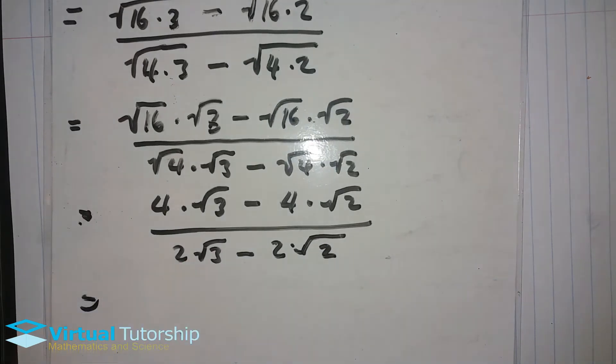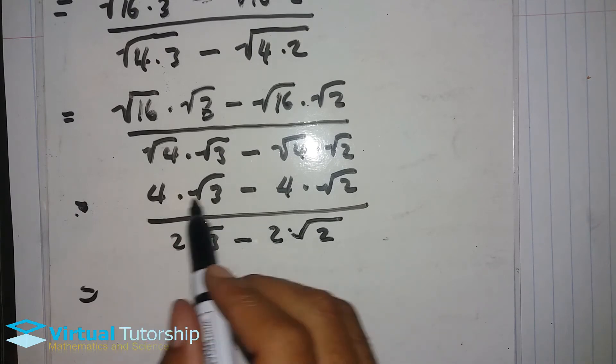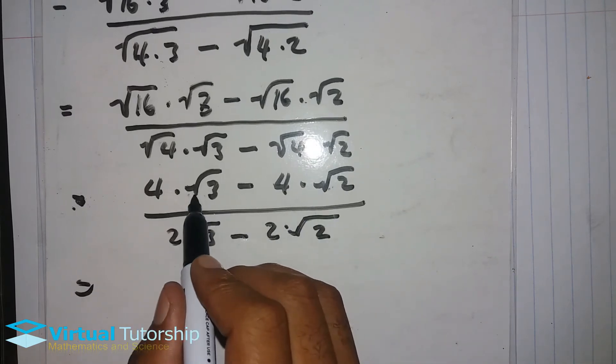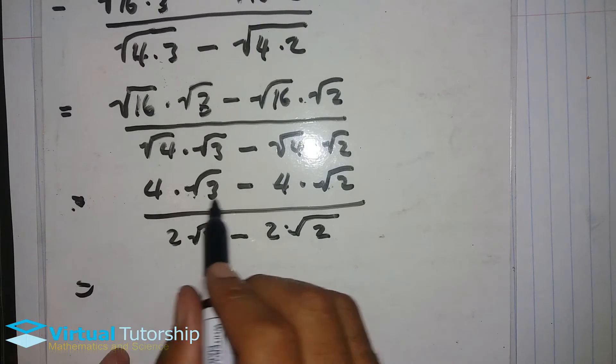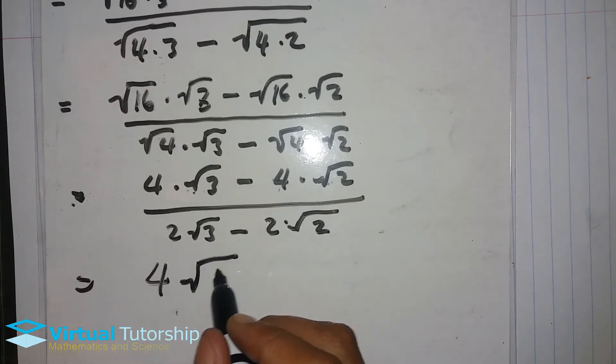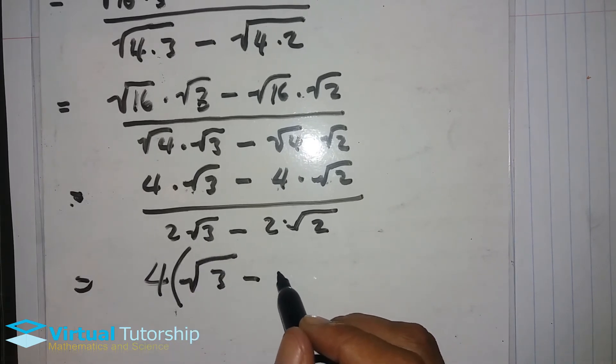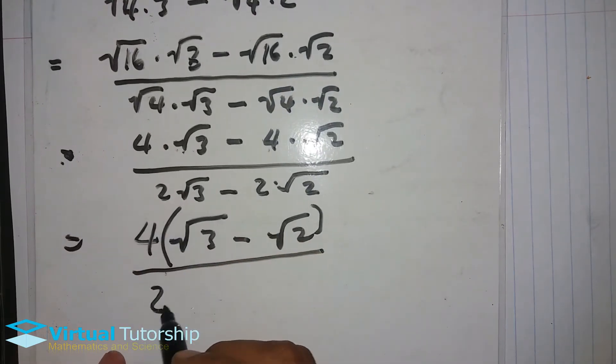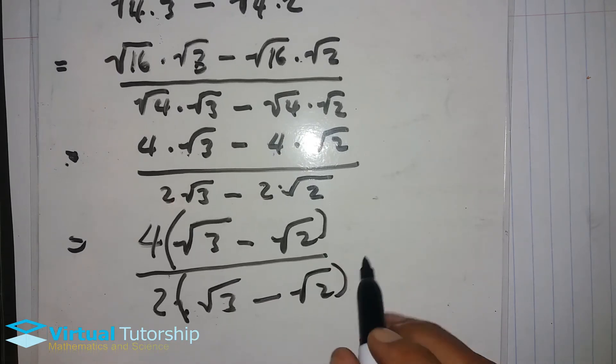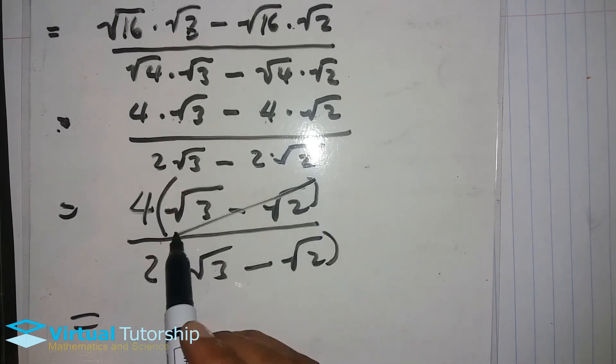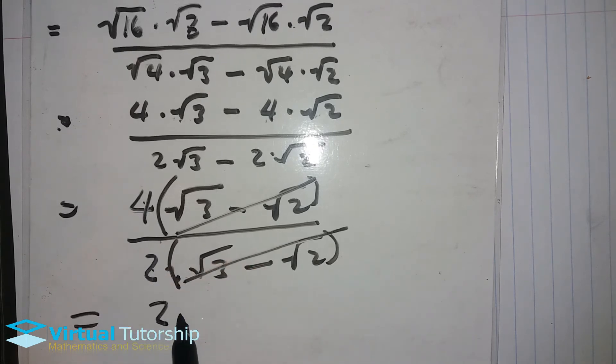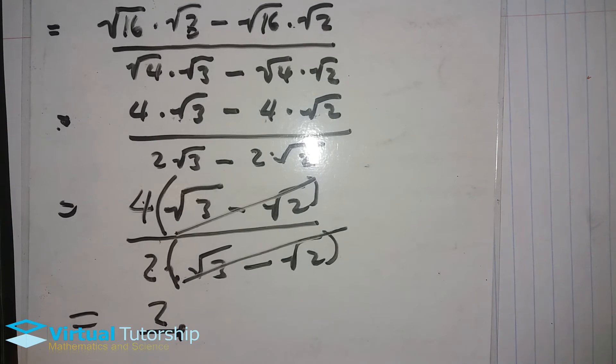Square root of 4 is 2. So it's 4 square root 3 minus 4 square root 2 over 2 square root 3 minus 2 square root 2. The common factor of 4 on the numerator, square root 3 and square root 2 are not like terms, so keep 4 as a common factor. So 4 times square root 3 minus square root 2 over 2 times square root 3 minus square root 2. The brackets are the same, so they divide to 1, and 4 over 2 is 2.